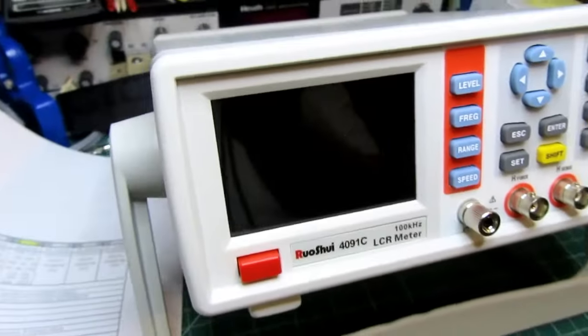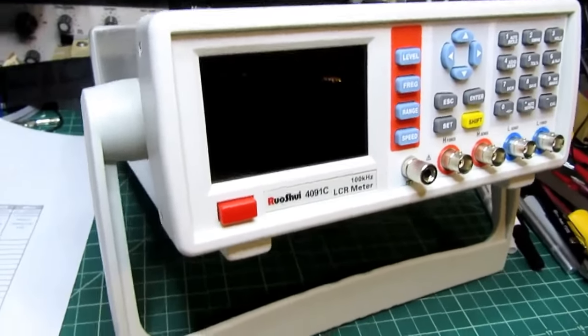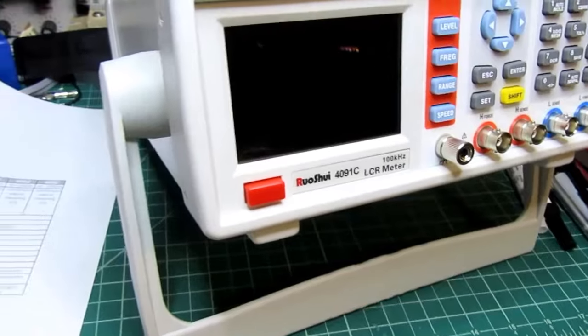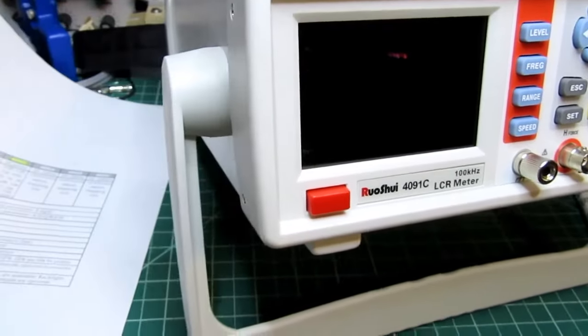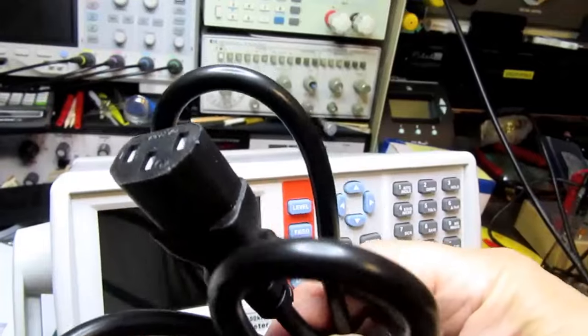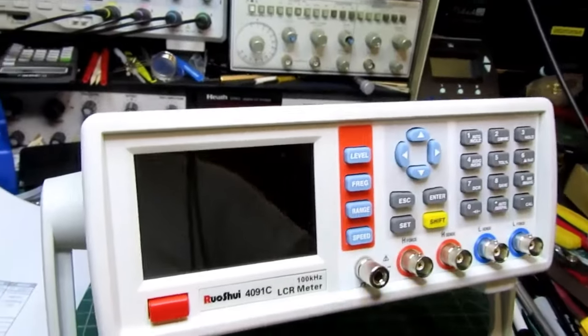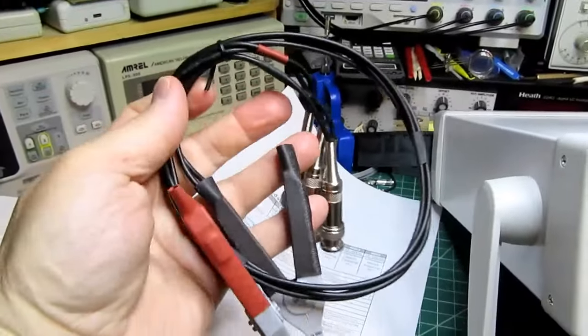So, in addition to the basic meter, the other things that came with this, and I think this is pretty typical regardless of the seller, is two replacement fuses for the power, the IEC-style power cord, and one set of test clips.